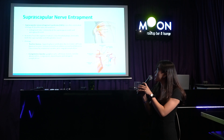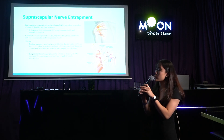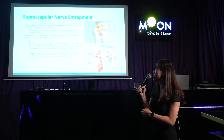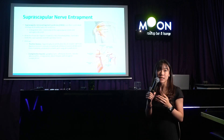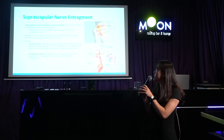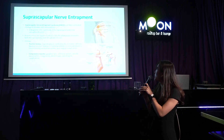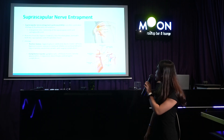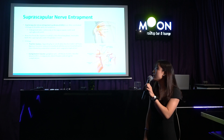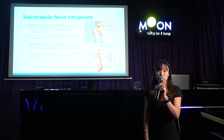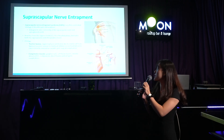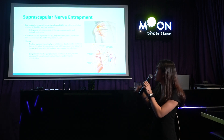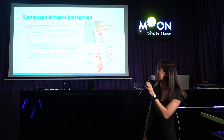Suprascapular nerve entrapment syndrome is an often overlooked etiology of shoulder pain and weakness. There are two main entrapment sites: commonly at the suprascapular notch at the top, and also at the spinoglenoid notch. It branches from the superior trunk of the brachial plexus at C5 and C6, and innervates both the supraspinatus and infraspinatus.